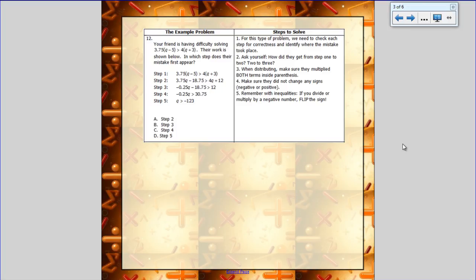So here are our steps. For this type of problem, we need to check each step for correctness and then identify where the mistake took place. So we have to ask ourselves, how did they get from step 1 to step 2, from step 2 to step 3, and so on. When distributing, make sure that you multiply both terms inside the parentheses. Make sure you didn't change any signs from a negative to a positive or vice versa. And remember that with inequalities, if you divide or multiply by a negative, then you have to flip the symbol.